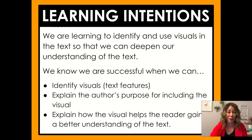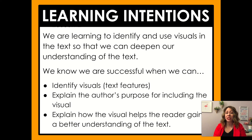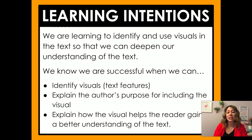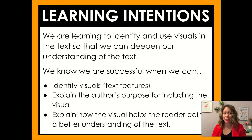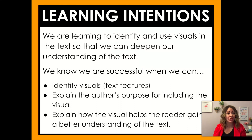Let's go back and review our learning intentions. We said we are learning to identify and use visuals in the text so we can deepen our understanding of the text. We know we're successful when we can identify visuals or text features — those were the maps. We explained the author's purpose for including the visual. And we explained how the visual helps the reader gain a better understanding of the text — we talked about the facts you can learn from a visual and the questions you could generate from a map.